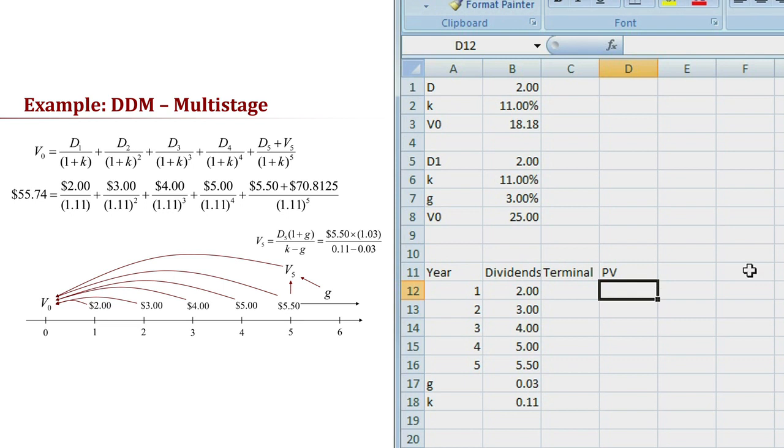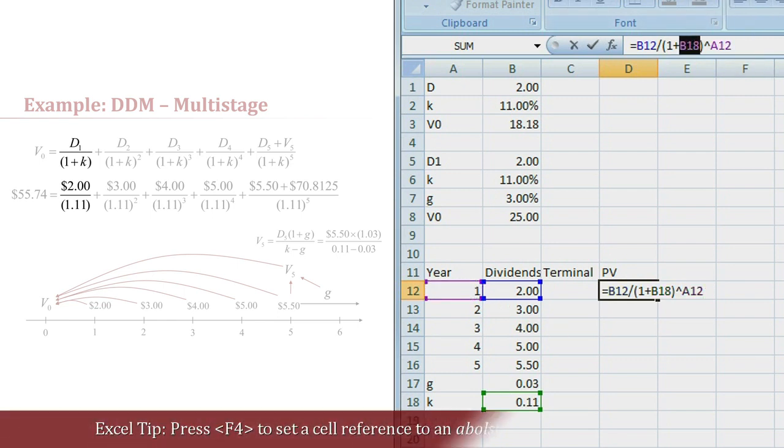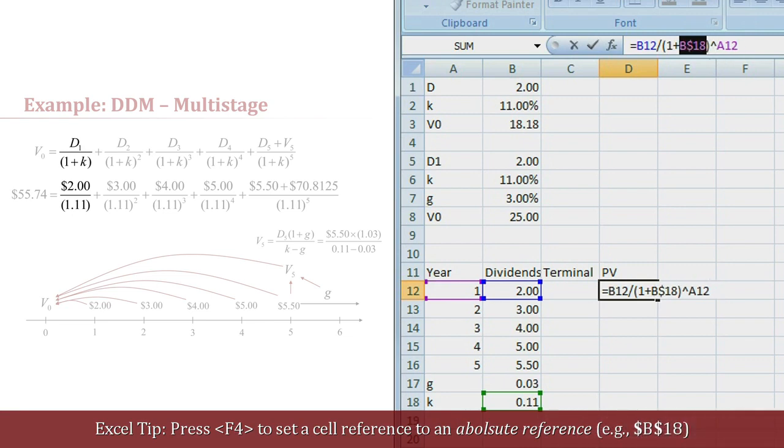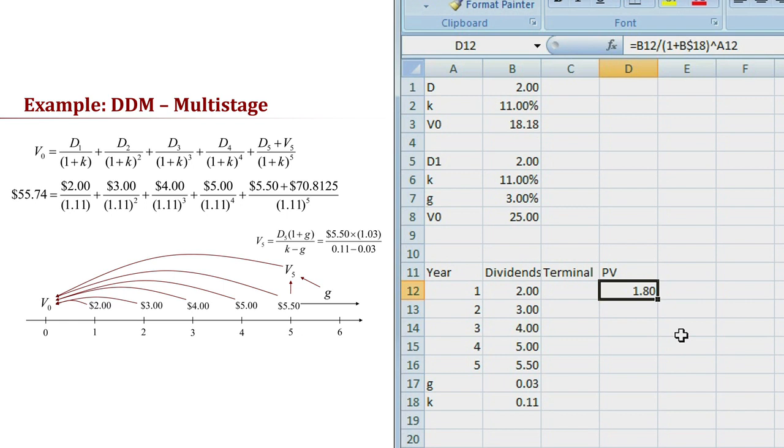Okay, so now I'm going to put in the present value formulas for these cash flows. Present value is just the cash flow divided by 1 plus the discount rate raised to the power reflecting the number of discounting periods, which is in the year column. I'm going to hit F4 to make the reference to the discount rate an absolute reference since the discount rate is always in row 18. And there we have the present value of the two dollar dividend to be received a year from now.